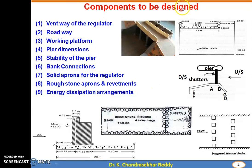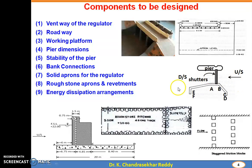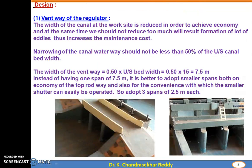The various components to be designed are: ventway of the regulator, roadway, working platform, pier dimensions, stability of the pier, bank connections, solid aprons for the regulator, rubstone aprons and revetment, and energy dissipation arrangements. The ventway is the clear opening; the roadway is where vehicles travel; the working platform is where shutters are operated; the piers support the structure; and the energy dissipation uses staggered friction blocks.